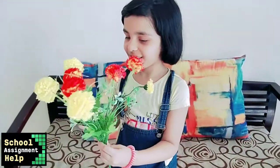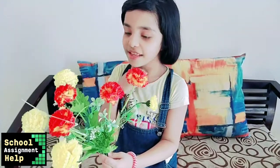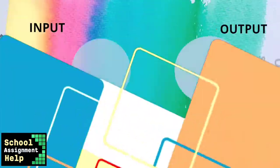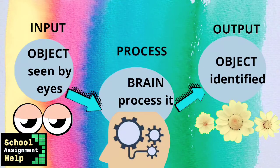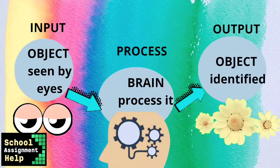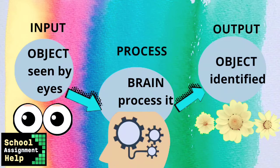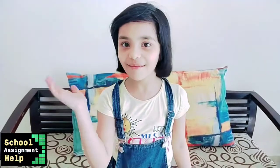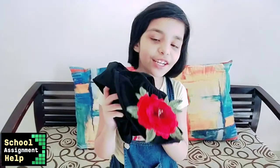Another example: I can see this object. I am seeing this object — this is the input. My brain processes it and tells me this is a flower. That is the output.